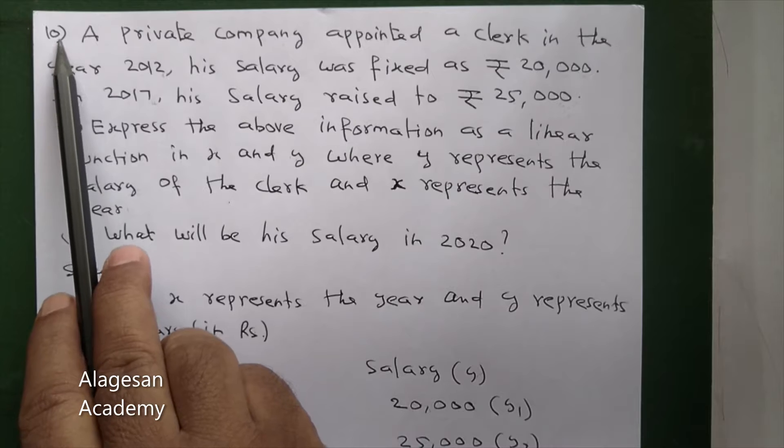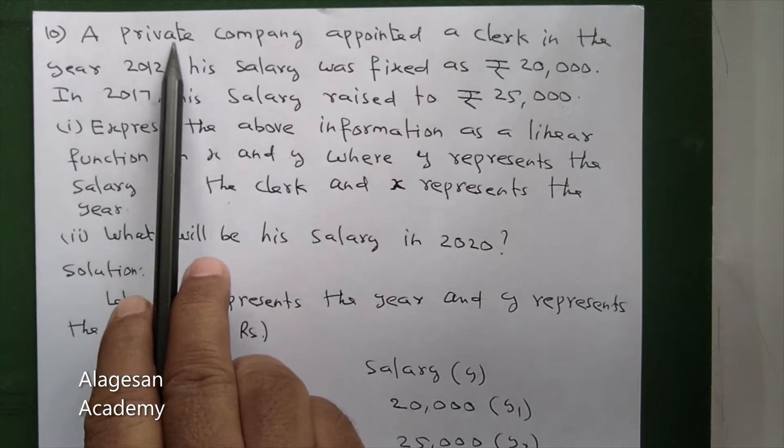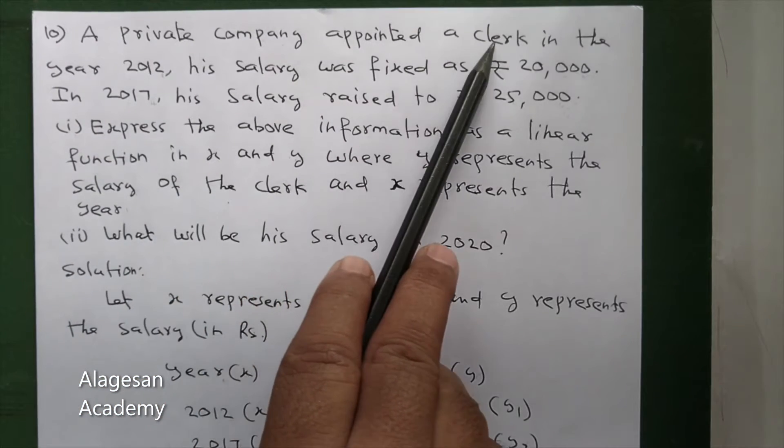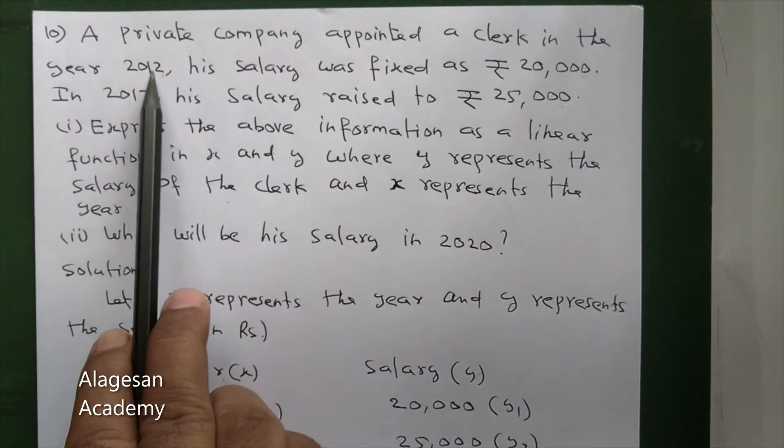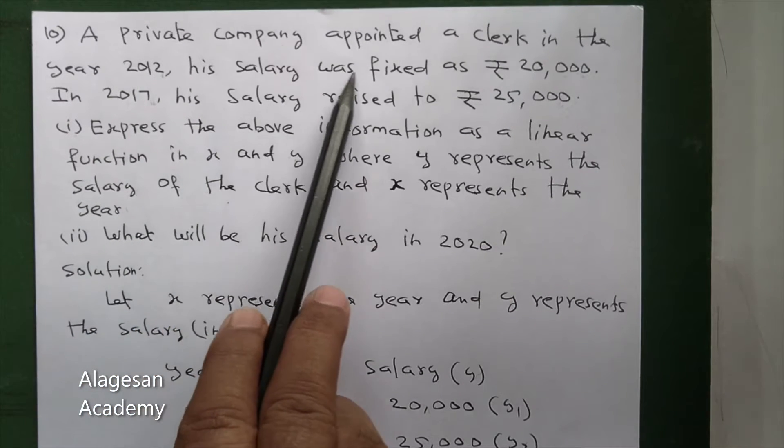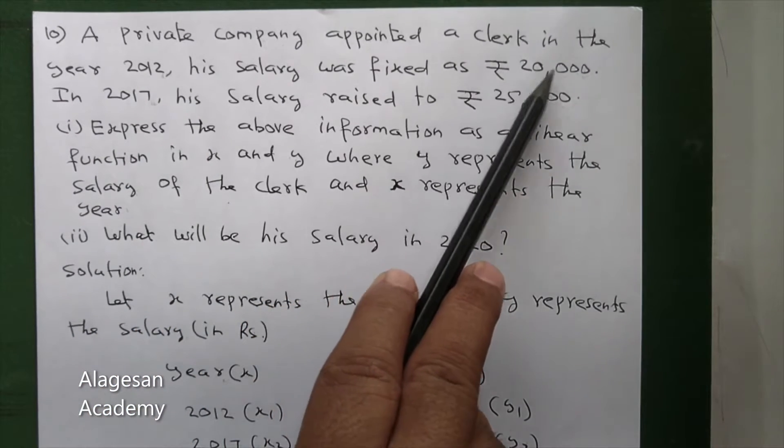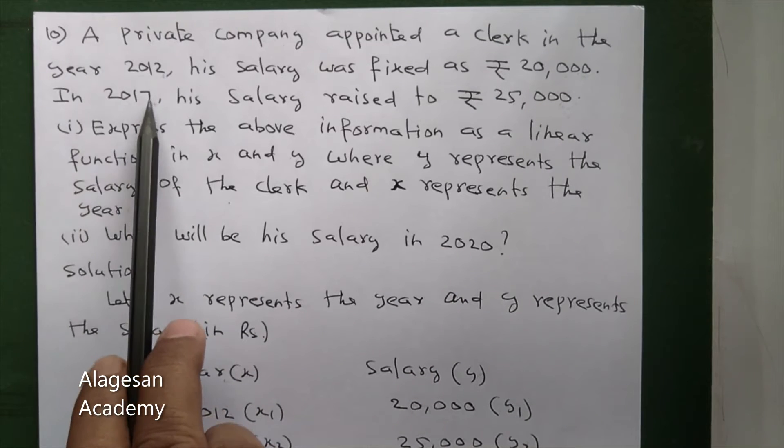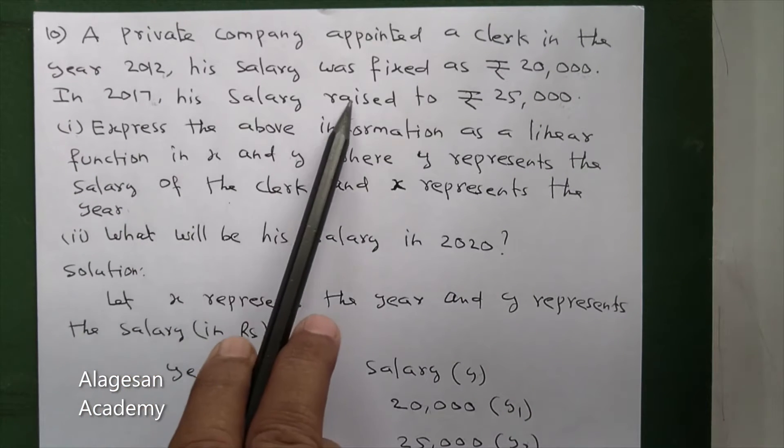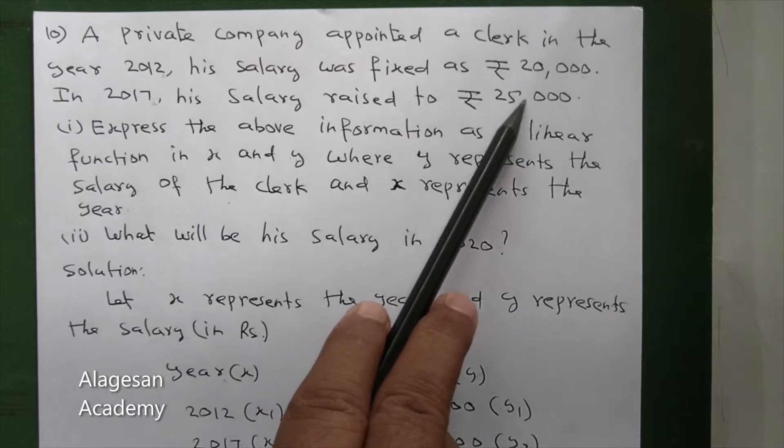Hi students, see question number 10. A private company appointed a clerk in the year 2012, his salary was fixed as Rs. 20,000. In 2017, his salary raised to Rs. 25,000.